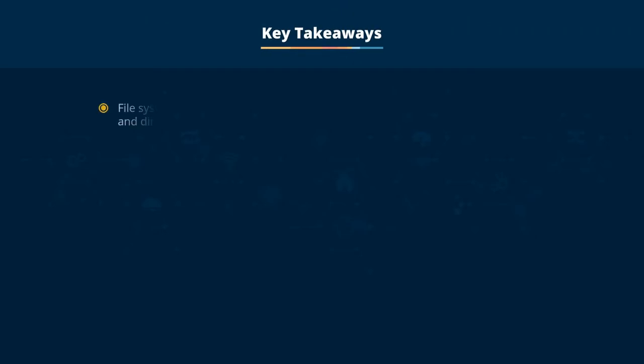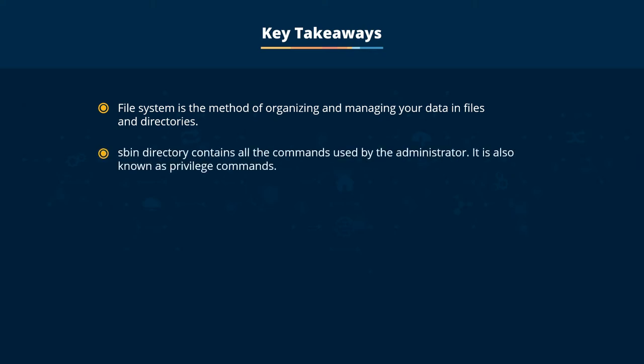Key takeaways. The file system is the method of organizing and managing your data in files and directories. The /sbin directory contains all the commands used by the administrator. These commands are also known as privilege commands.